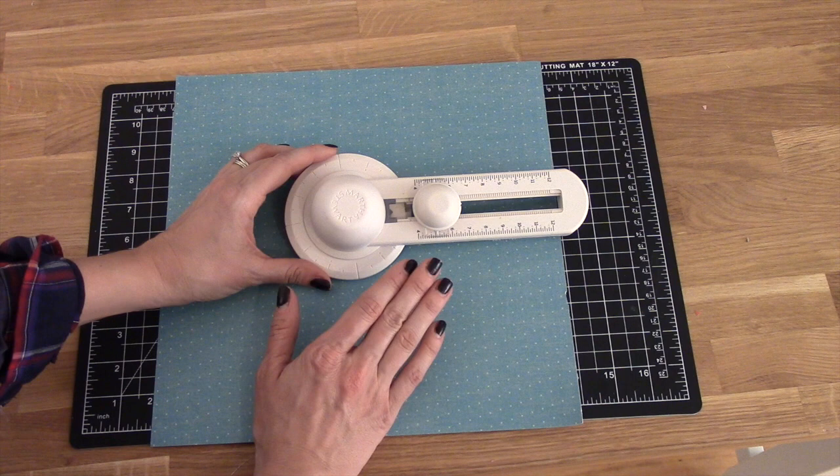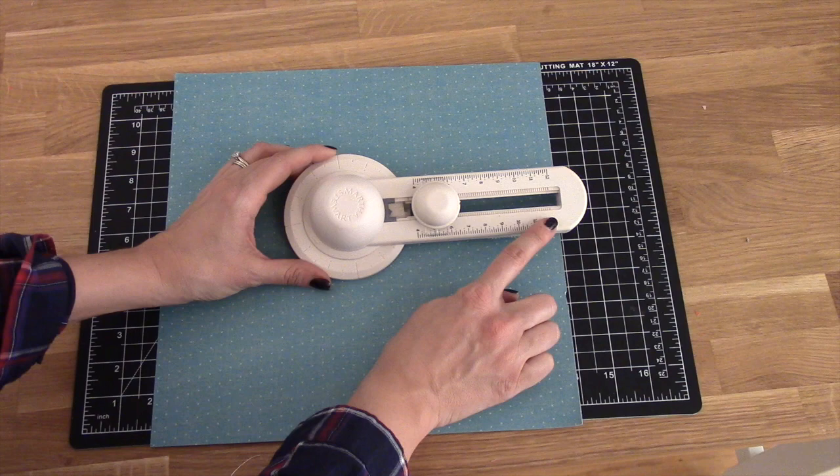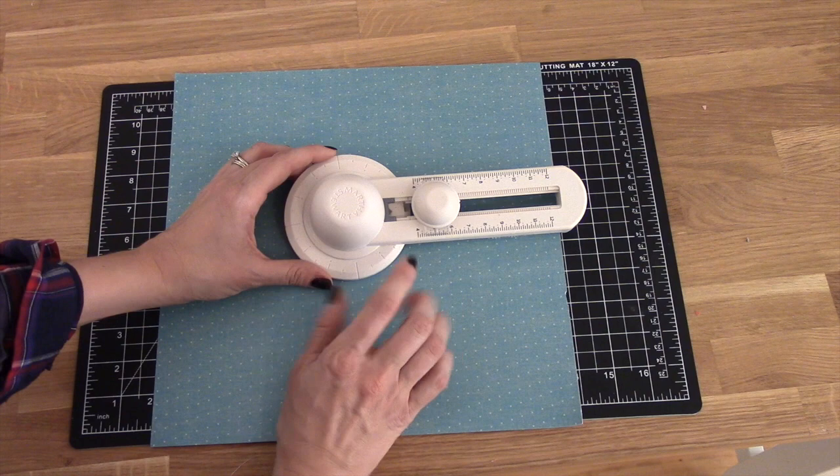It lets you cut perfect circles from 4 inches all the way to 12 inches every single time. So no more running around your house trying to find objects that are circular in shape. This guy is going to do the trick.